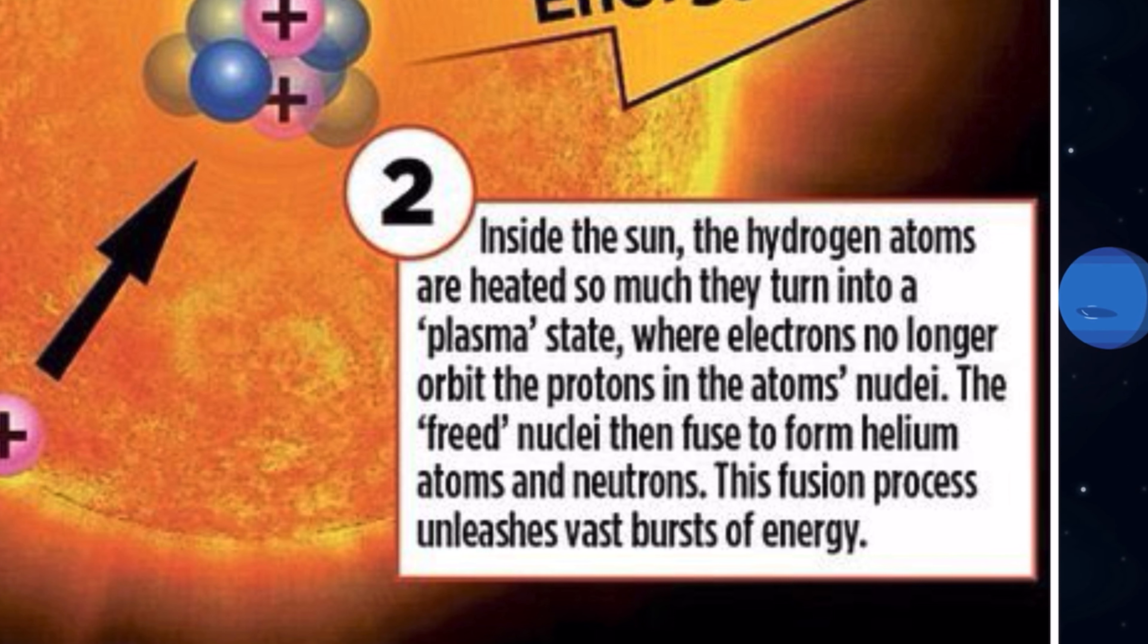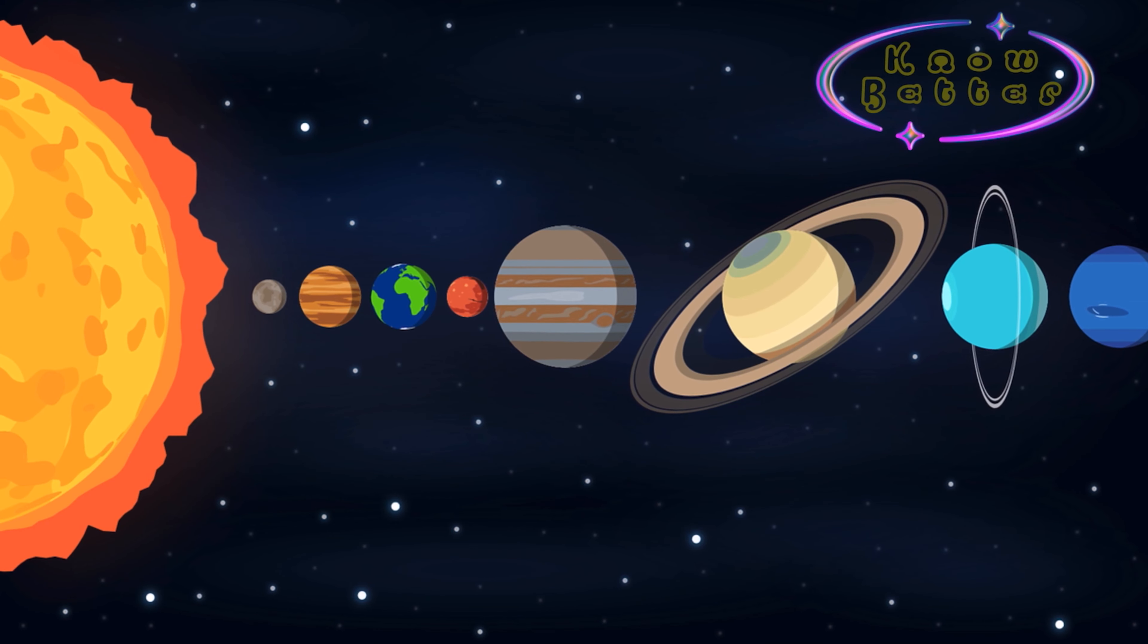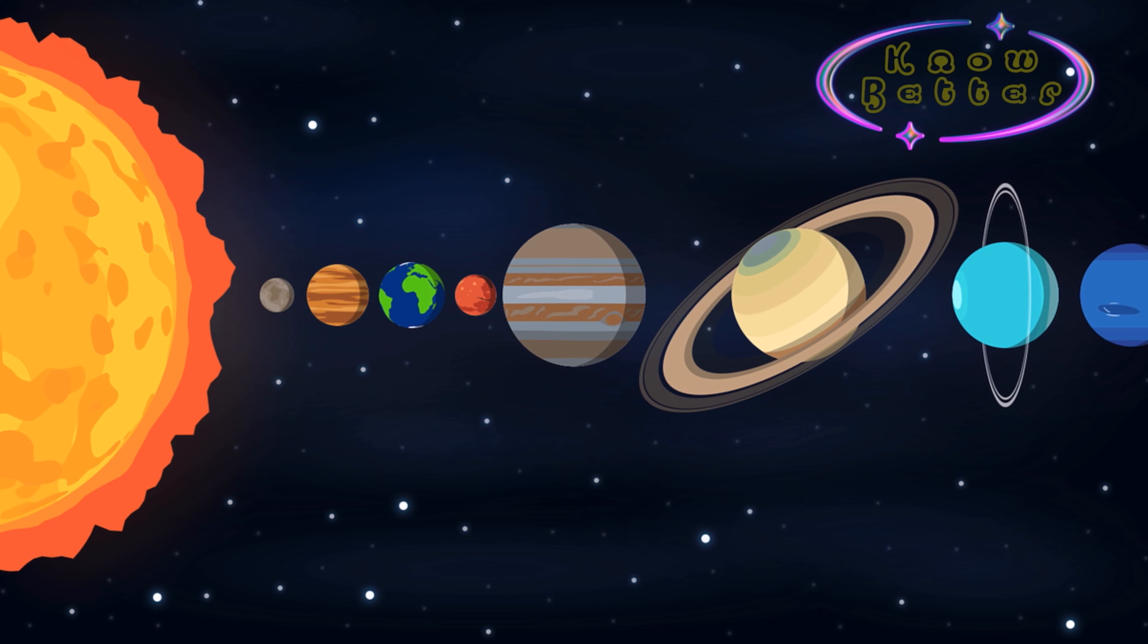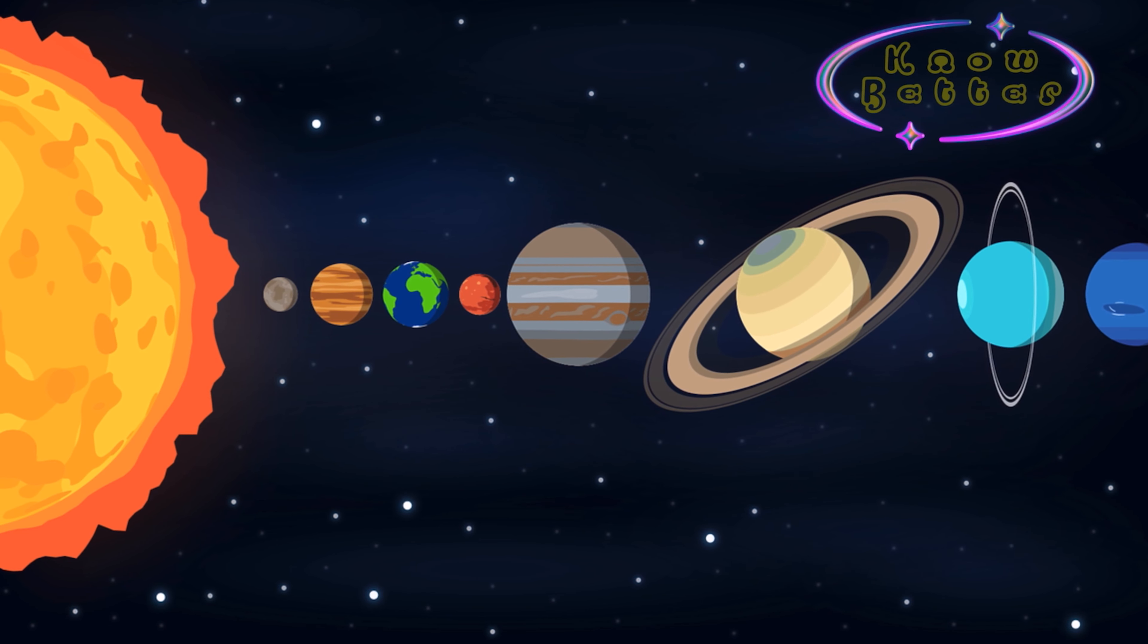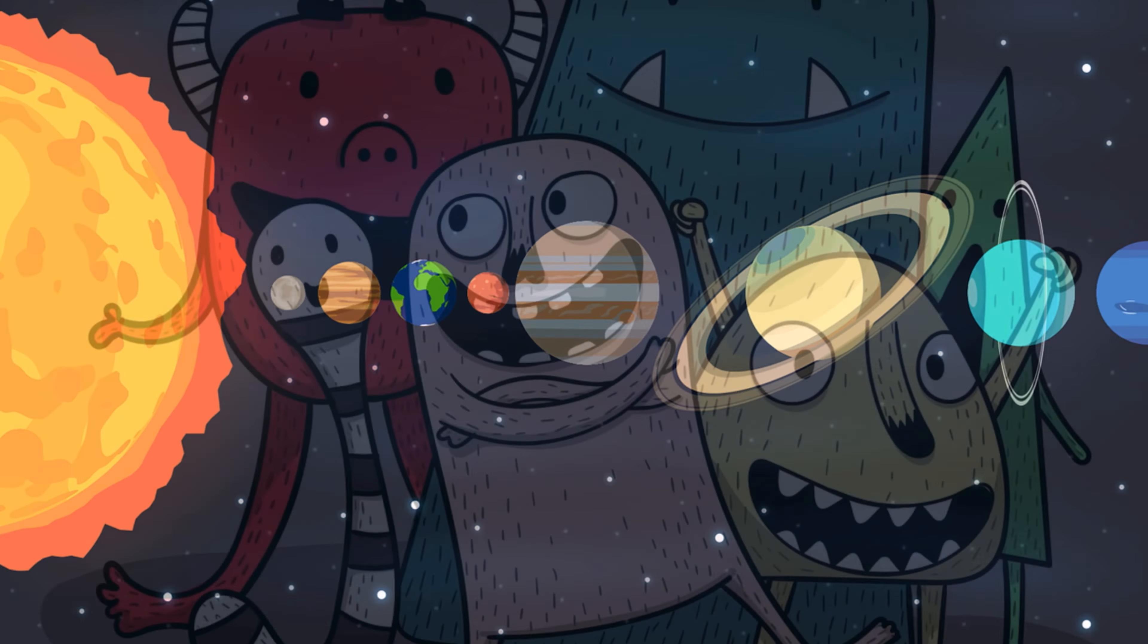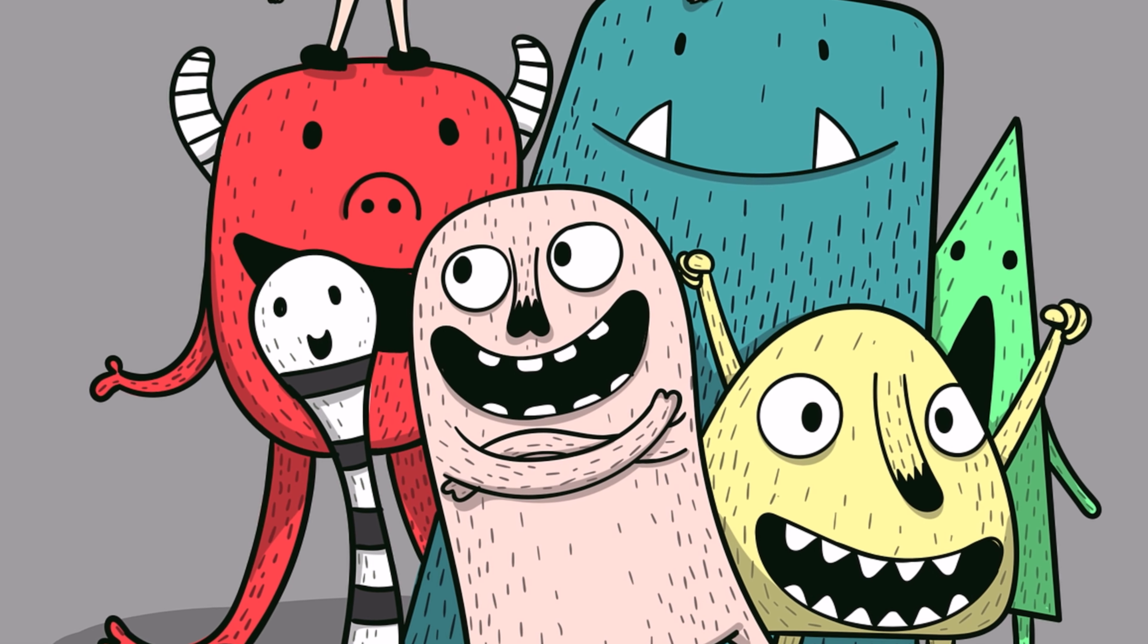The freed nuclei then fuse to form helium atoms and neutrons, and a real outburst of energy happens. This energy is so great that even many kilometers away on Earth, we can feel the prominence of sunlight and heat.